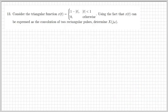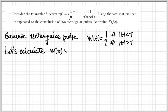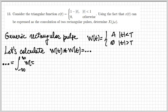The final exercise for today is about a triangular function, defined as 1 minus |t| between minus 1 and 1, and zero elsewhere. By using the fact that this triangular function can be expressed as a convolution of two rectangular functions, I should determine its Fourier transform. Let's write the generic rectangular pulse expression — I call it W of t — with a generic amplitude a and a generic span in time from minus capital T to plus capital T. I'm going to calculate the convolution between W of t and itself to see if I can produce the triangular function x of t.